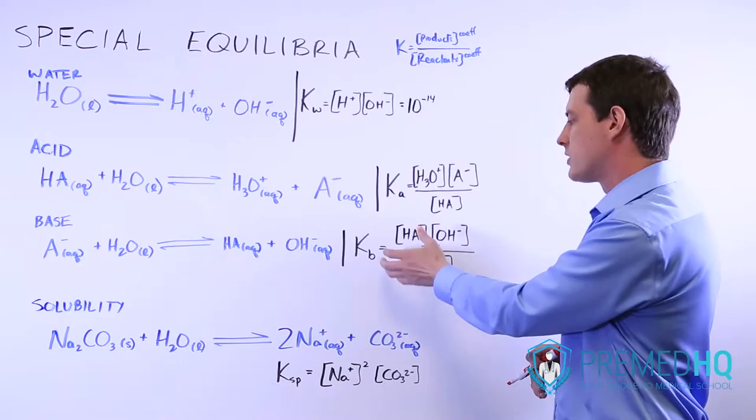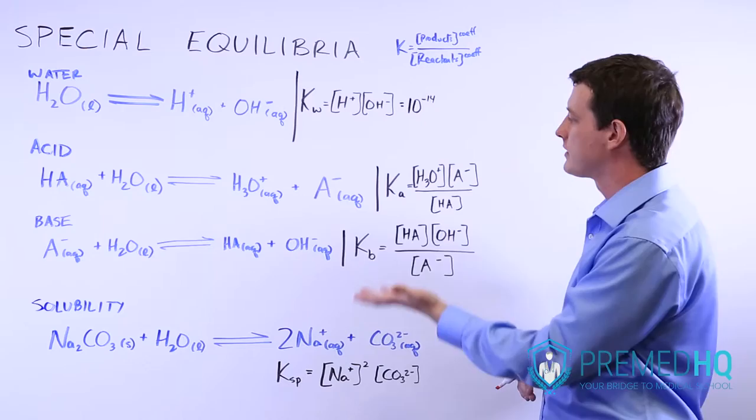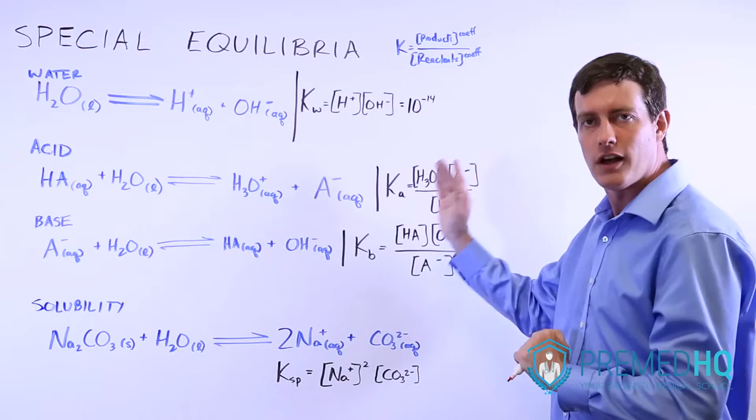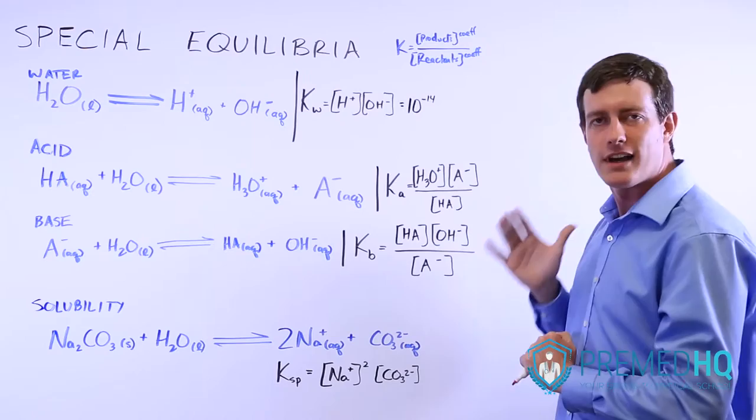This is something you'll encounter a lot: a strong acid has a high Ka and a low pKa, and a strong base has a high Kb and a low pKb. So be aware that you want a high K value if it's a strong member of that species, but you will want a low pK value.